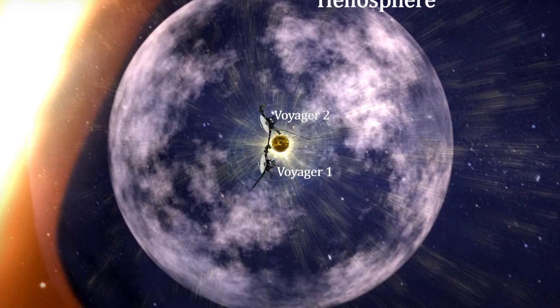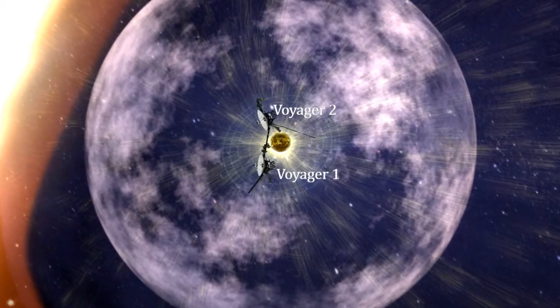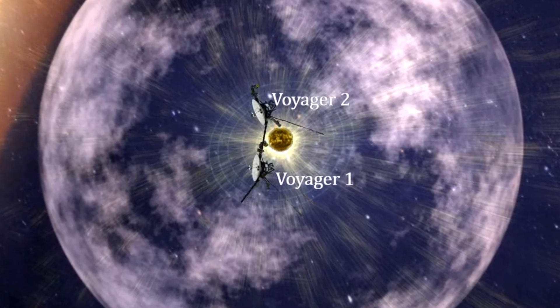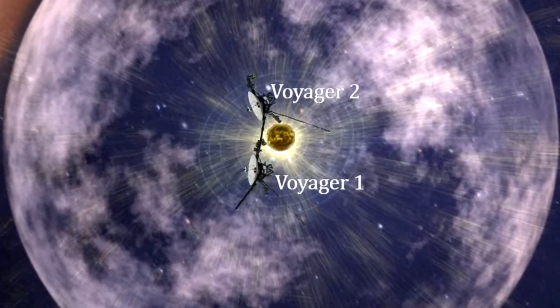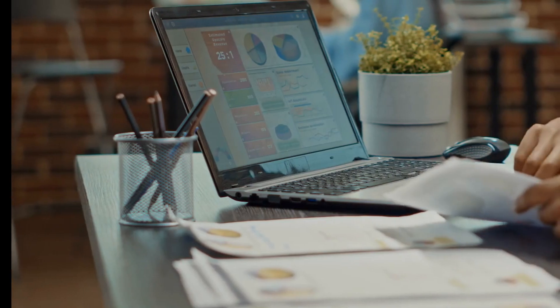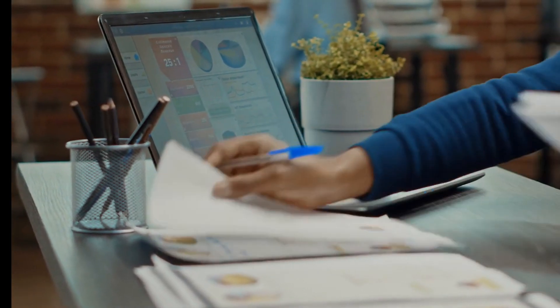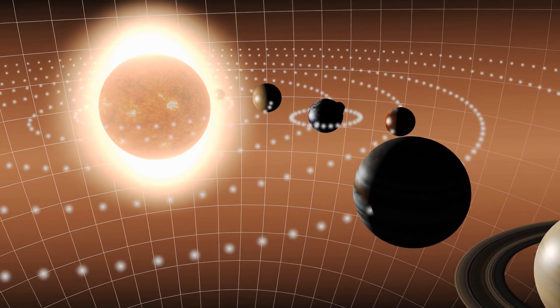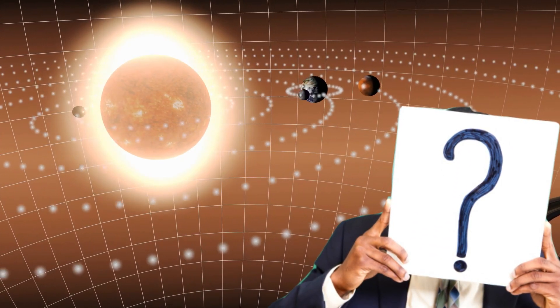When Voyager 1 crossed the heliopause, the line between the solar wind's impact and the interstellar medium, it went into a part of space that no human-made object had ever been before. Scientists took measurements of interstellar space for the first time at this historic event. These measurements supported ideas and raised new questions about the nature of the galaxy.